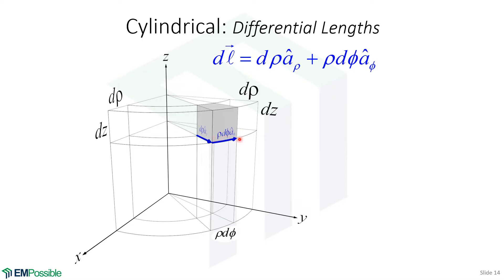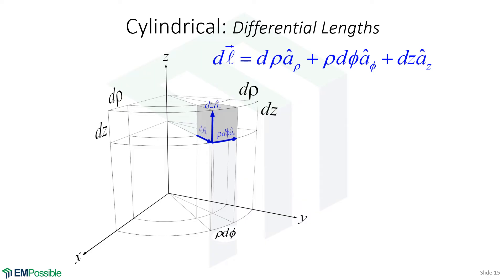Our next differential length is along the bottom outer edge of our differential volume, and this is a little different. It's still a vector with a magnitude and direction. The magnitude in the phi direction is rho d-phi — we include the rho term because as we work outward and rho increases, this differential length gets larger. The direction is unit vector a-phi. The last differential length is the same as in Cartesian coordinates: a vector with magnitude dz in the z direction. In one picture, we have all three differential lengths for cylindrical coordinates.